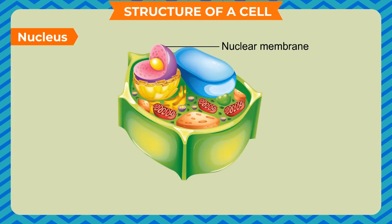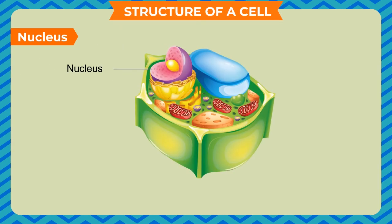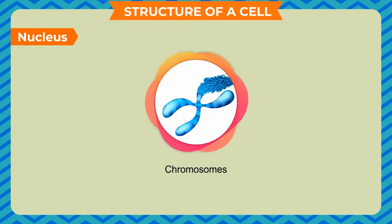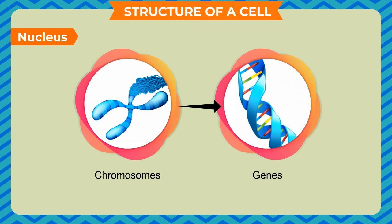They are: Nuclear membrane - it allows the passage of certain materials in and out of the nucleus. Nucleoplasm - a dense fluid present in the nucleus. Nucleolus - it is a spherical body present at the center of the nucleus. It contains RNA, ribonucleic acid. Chromosomes - these are thread-like structures present in the nucleus. Chromosomes contain DNA, which contains the basic hereditary units called genes.